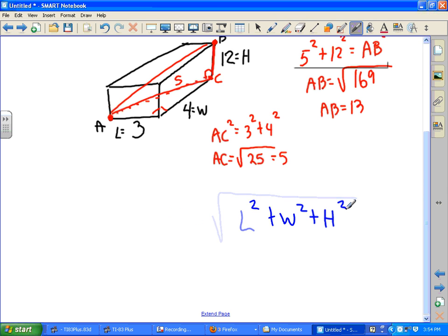So in this case, if we had taken three squared plus four squared plus twelve squared, then you know what the answer is going to be, right?